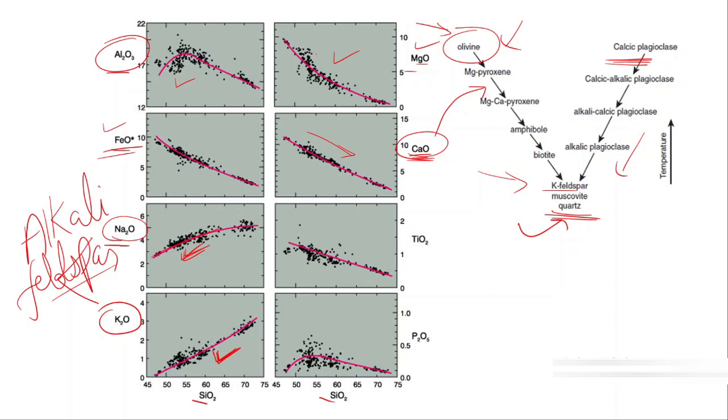The alumina trend first shows an increasing trend and later a decreasing trend. What do we understand? Alumina is not increasing in absolute terms; it's just that it is not crystallizing earlier and is getting enriched in the melt first, then crystallizing.